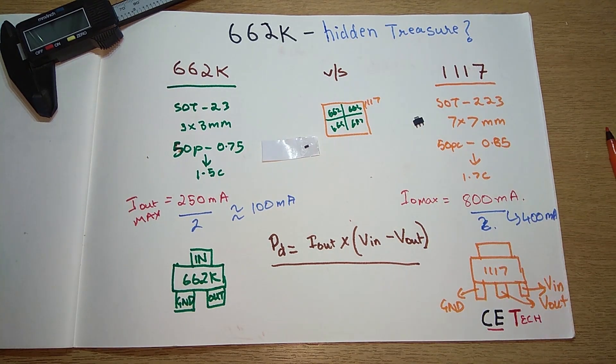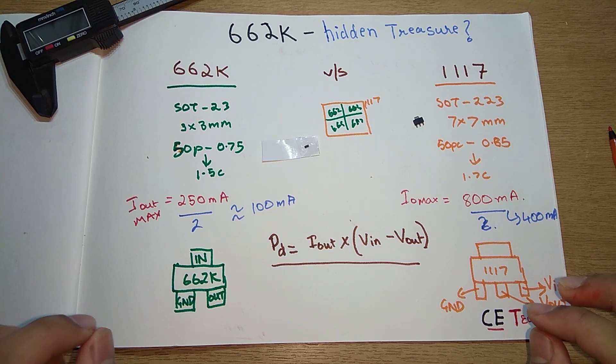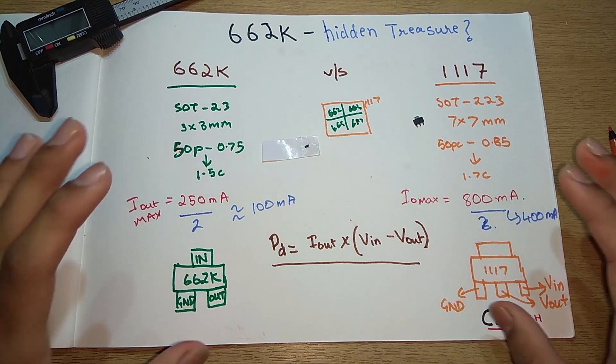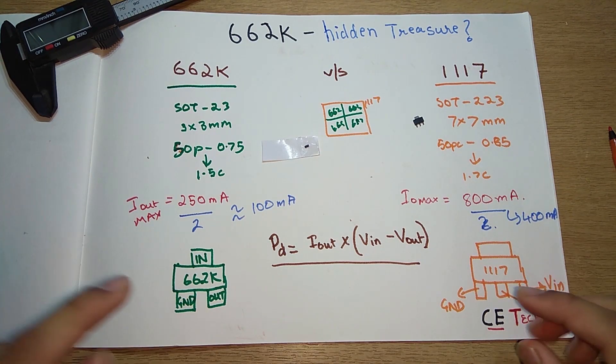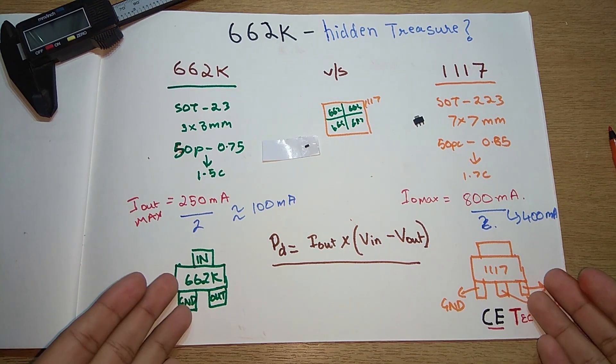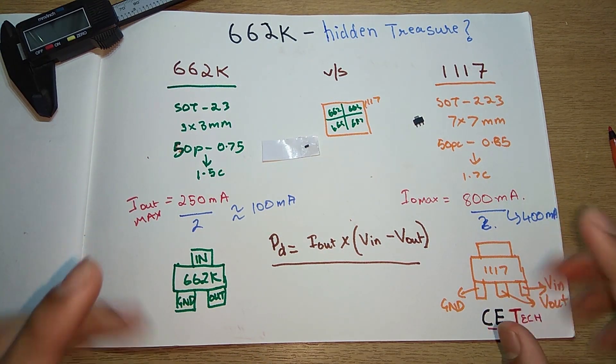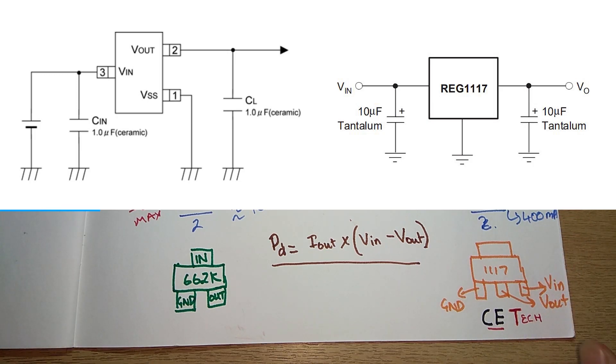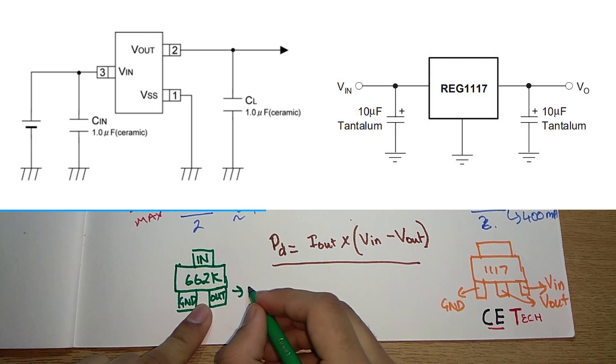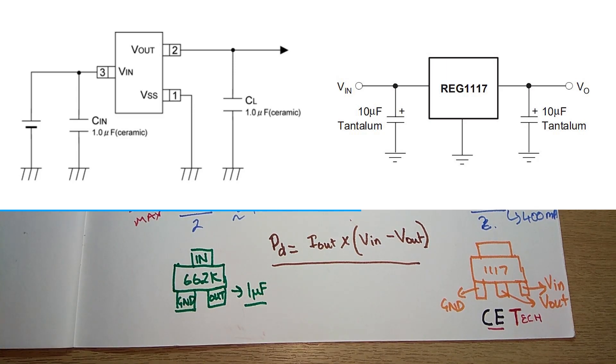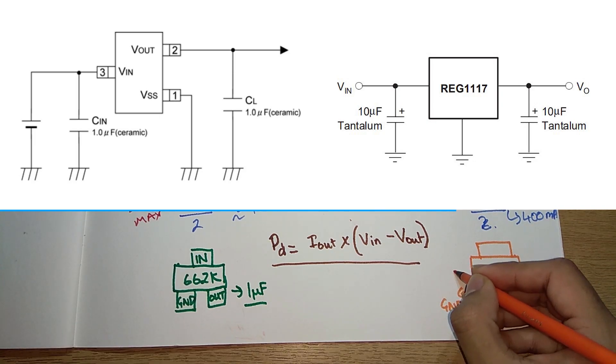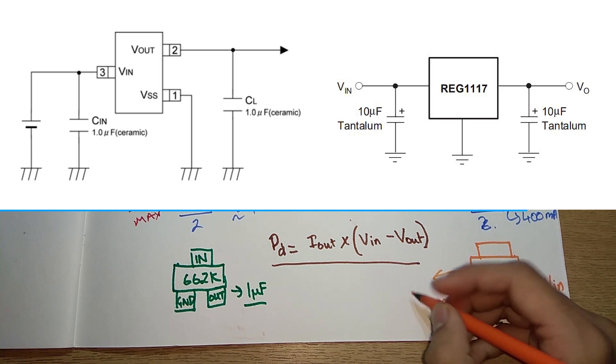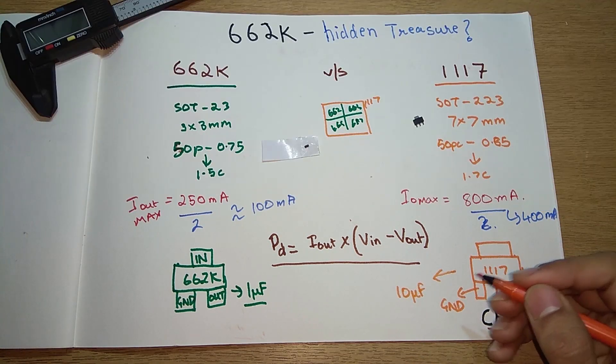For stability, these voltage regulators need to be stable while converting voltages, so capacitors are added externally while building the circuit. I'll put photos of the datasheets right here. These are the circuits recommended for use. As you can see, the 662K requires two capacitors of 1 microfarad each as input and output capacitors, which remove basic ripples. The 1117 recommends a 10 microfarad capacitor at its input and output.